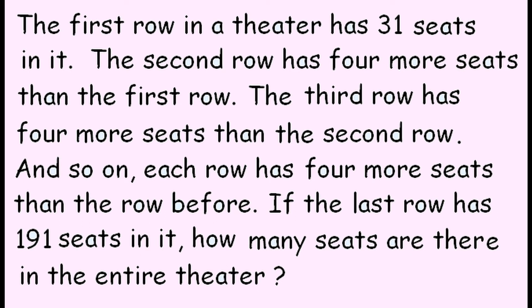Well, if you want to know the total number of seats, we just have to add what is given, which is the number of seats in each row. The first row seats 31, the second row seats four more, that's 35, the next one seats 39, and so on